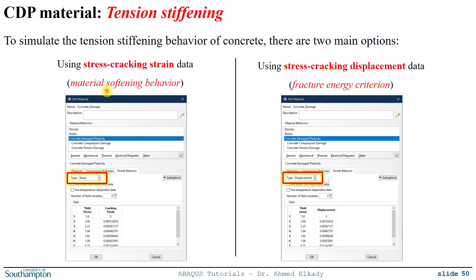In that option we defined the material softening behavior, providing how the stress in tension goes down and deteriorates with increasing strains. If you also add damage in addition to the plasticity, when you define the concrete damage you also define the relation between the damage variable d with respect to the cracking strain.